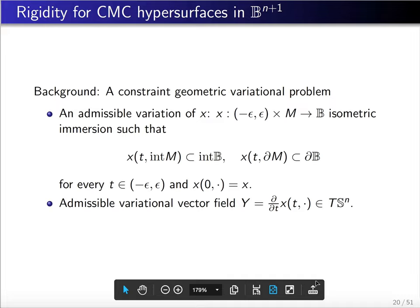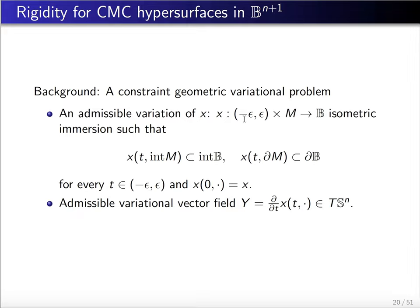As well known, the CMC hypersurfaces with free boundary in a ball arise from a constrained geometrical and variational problem. So if we have a hypersurface given by an isometric immersion x, then we define an admissible variation x(t), so that it is still an isometric immersion into the ball.